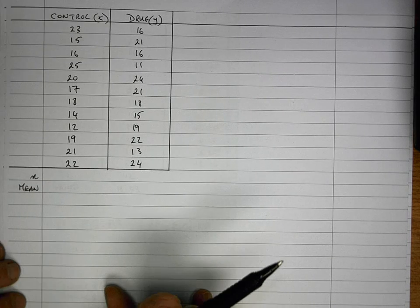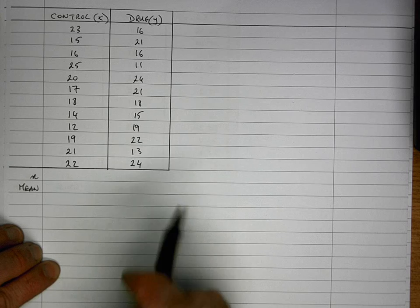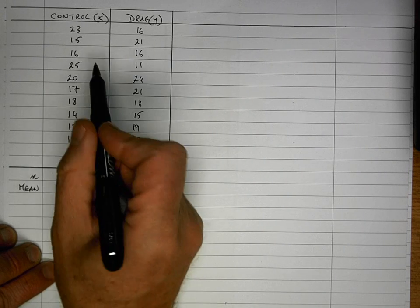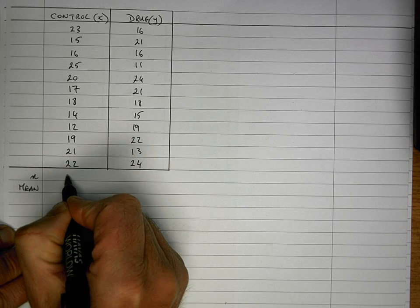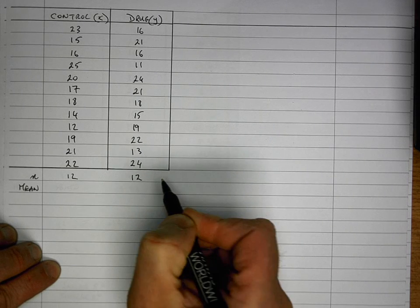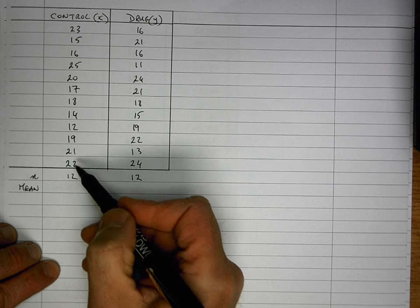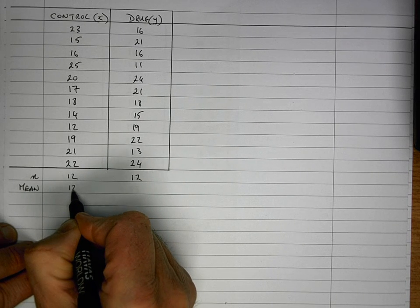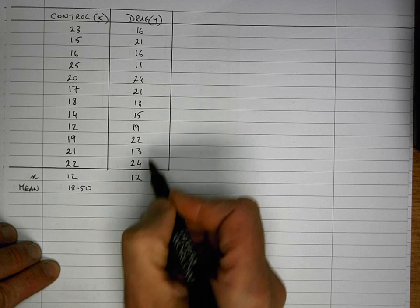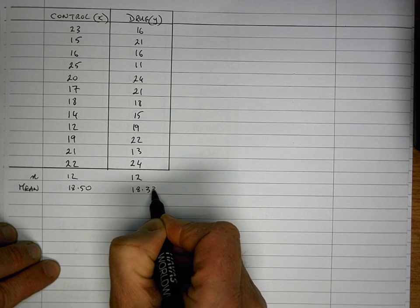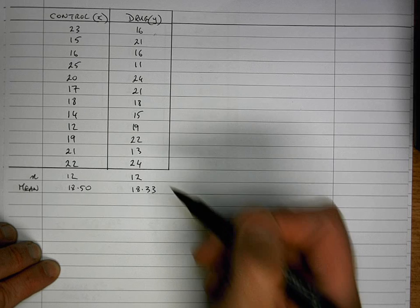Okay, so the first thing we need to do is to do some basic descriptive statistics here. So when I count all the values in the control, that's my designated x value, I count all the values there, I find that there are 12 values, and of course they are the same in the drug group, the y group. So when I add all of these up and divide by 12, the mean that I get here is going to be 18.50, and the mean of the drug group is 18.33. Of course, all these values are added up and divided by 12.